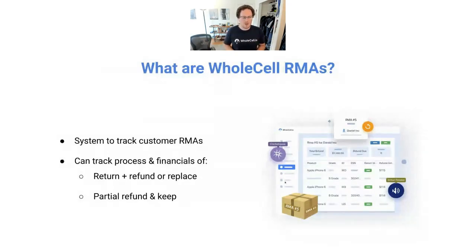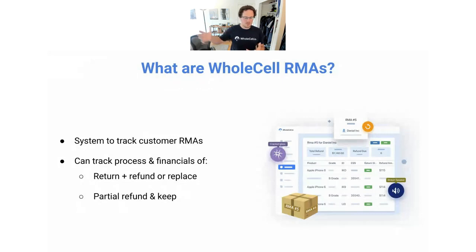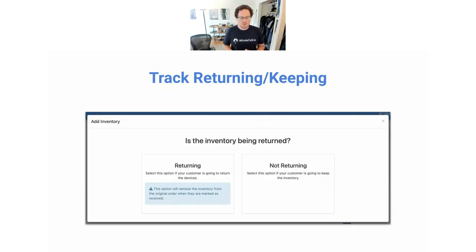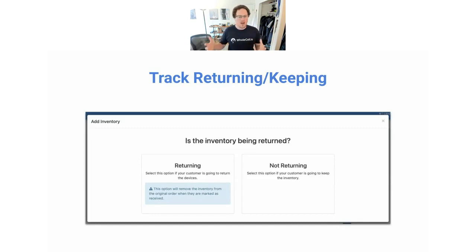Wholesale RMAs can provide a lot of clarity to email-and-spreadsheet combo systems that don't give you good visibility in the long term. When you're adding inventory to an RMA in Wholesale, you have the option to choose: is the customer returning this device for a replacement or a refund? Or are they not returning it — are they keeping it and just wanting some money back because of an issue with the item? You have both options whenever you add an item to an RMA.